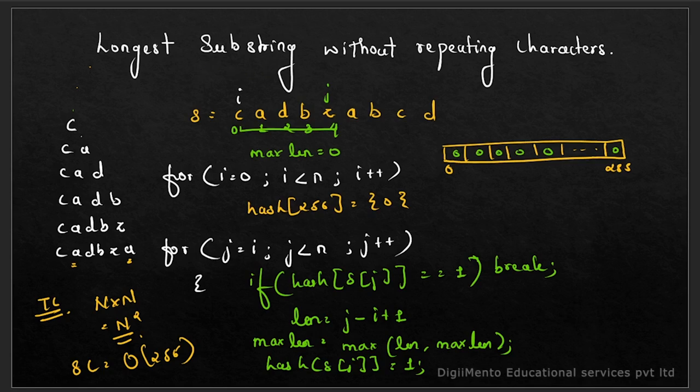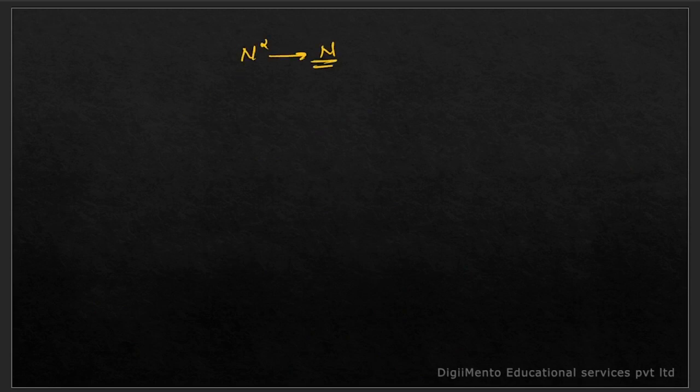Whenever we see a problem about substrings, we should know to use two pointer and sliding window approach. So whenever we find a substring problem, think about two pointers and sliding window. Let's go towards the optimal approach and make the time complexity from O(n²) to O(n).